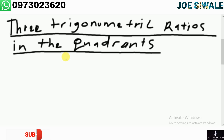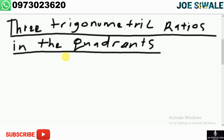We're going to proceed with trigonometry and now we're going to look at the three trigonometric ratios in the quadrants. There are four types of quadrants: the first quadrant, the second quadrant, the third quadrant, and the fourth quadrant.